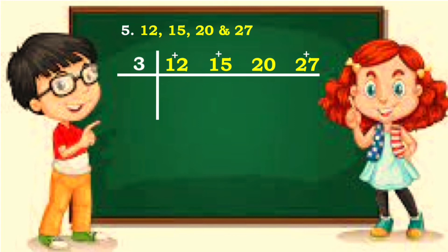12 divided by 3 is 4. 15 divided by 3 is 5. And rewrite 20. And 27 divided by 3 is 9. 4 and 20 are multiples of 4. So divide them by 4.